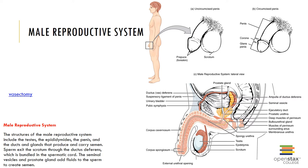The accessory structures of the male reproductive system include the seminal vesicles, prostate gland, and bulbourethral glands, also known as Cowper's glands. The seminal vesicles are paired glands located posterior to the bladder and produce a viscous alkaline secretion containing fructose, prostaglandins, and clotting factors, contributing about 60 percent of the volume of semen. The prostate gland is a single small gland located at the base of the bladder.